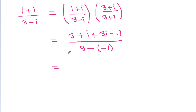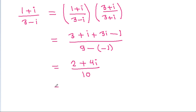And it is 3 minus 1 is 2, plus 4 iota, by 9 plus 1 is 10. And it simplifies to 1 plus 2 iota by 5.